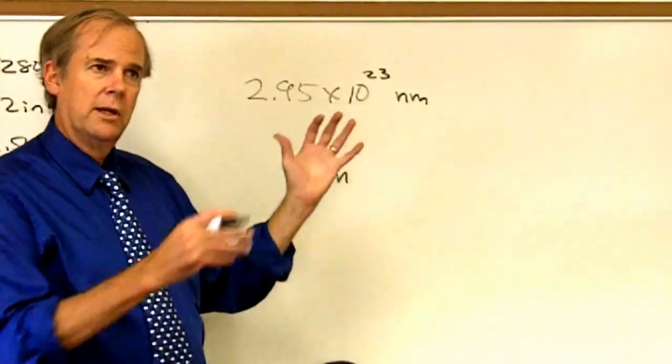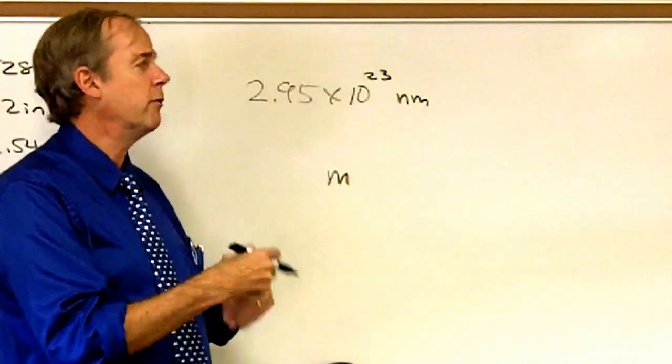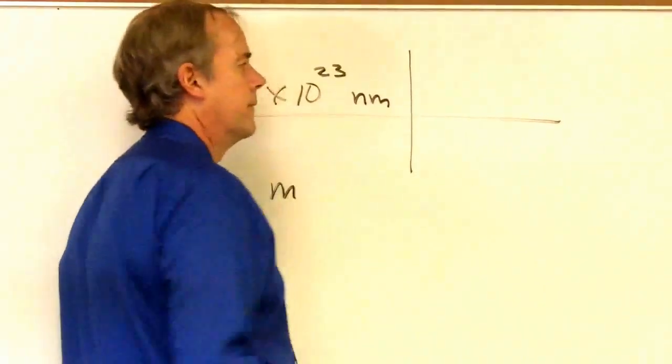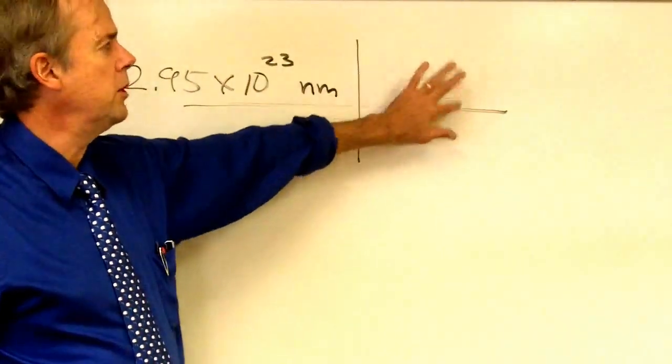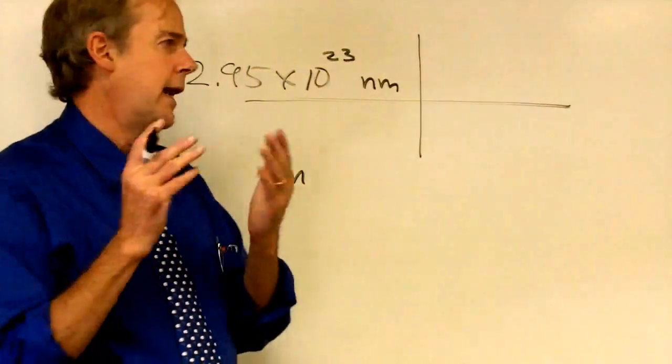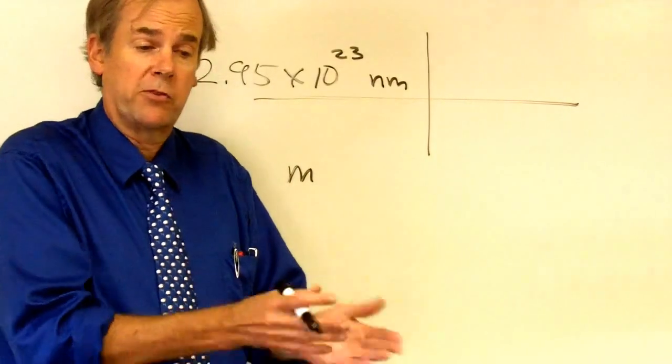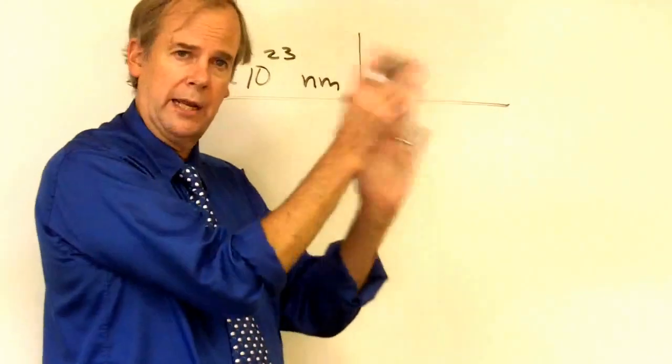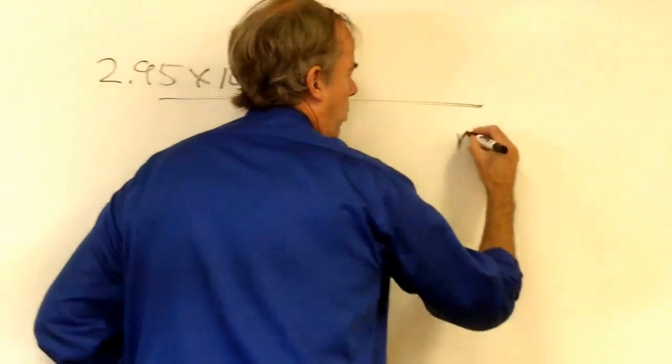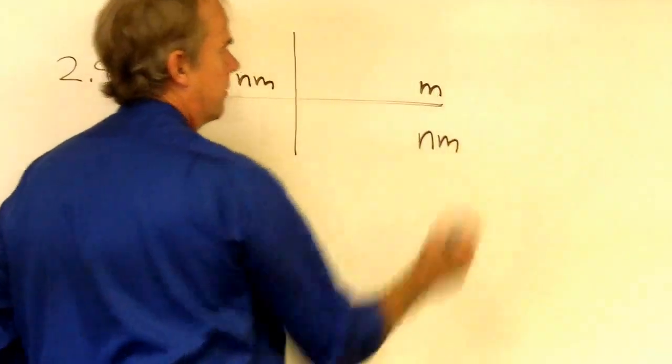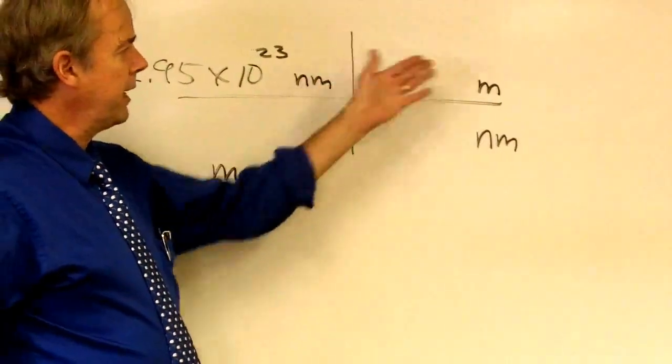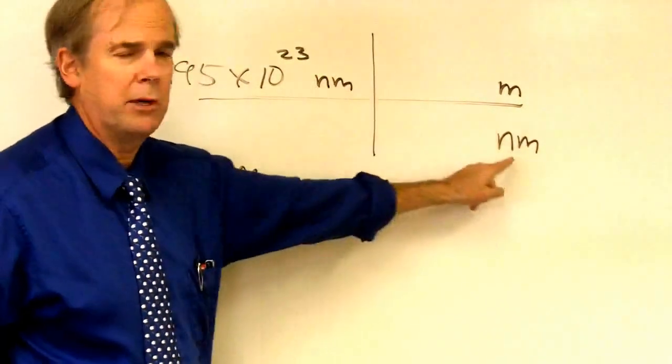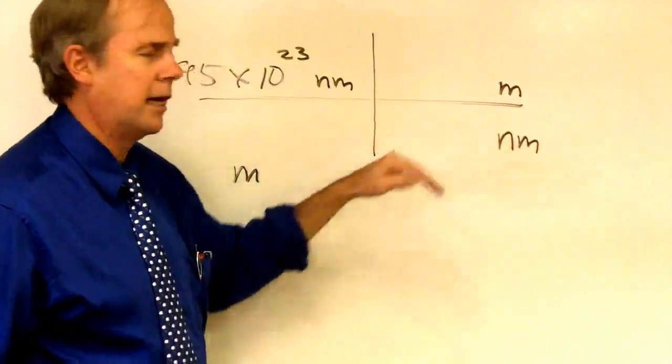If I want to make this conversion, I need to multiply this by a value that's equal to 1, and therefore I won't change the value. The way in which I should do that is to set up a relationship between two units for which I know an equality. How many nanometers equal how many of some other units. If I were to write that ratio, I would be multiplying this measurement by 1 and not changing its value.